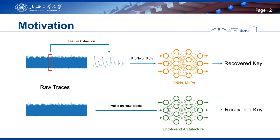Let's start with the basic motivation of this work. Deep learning has been widely used in side-channel analysis in recent years. Many works defeat countermeasures like masking and address the desynchronization issue simultaneously using deep learning. However, in almost all of these papers, selected narrow trace intervals instead of raw traces are used, even when the implementation is protected by masking countermeasures. That means there is a manual feature extraction before the profiling.